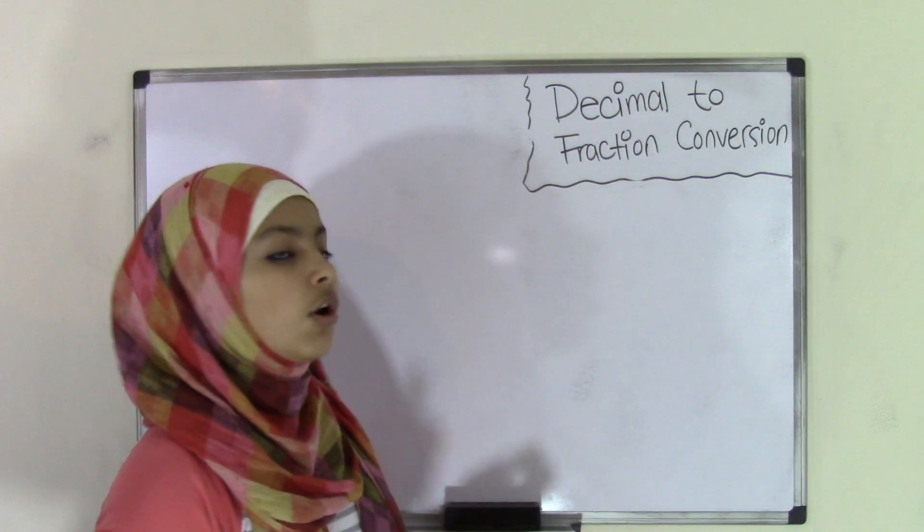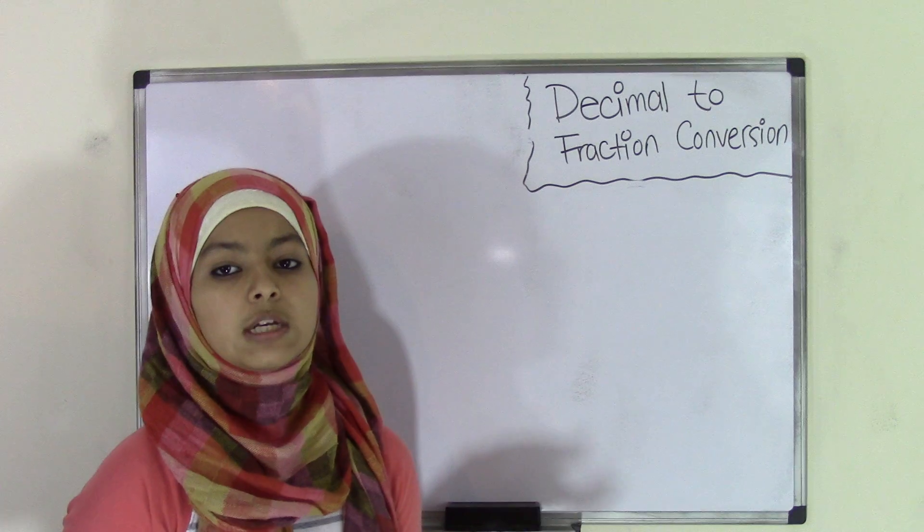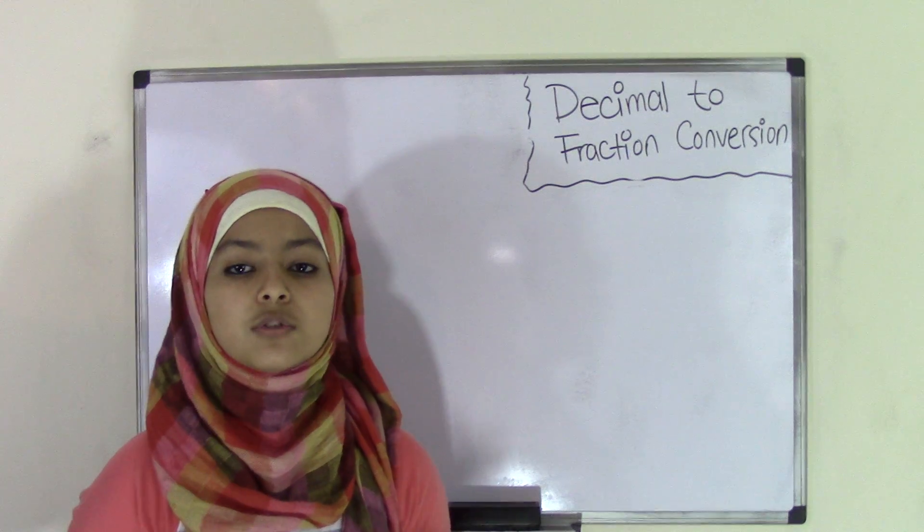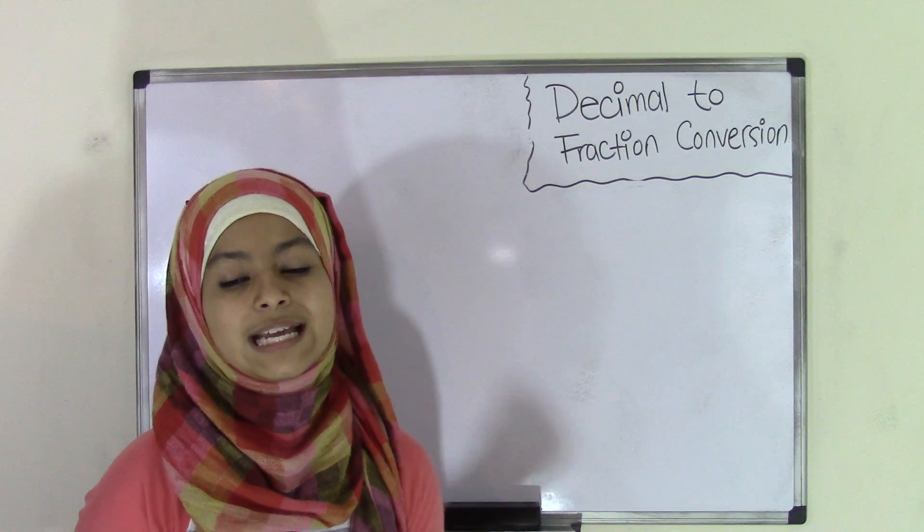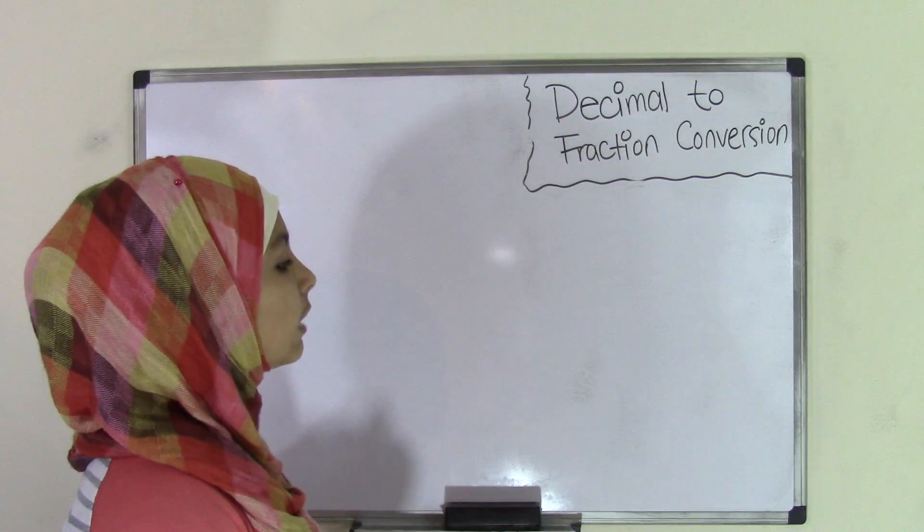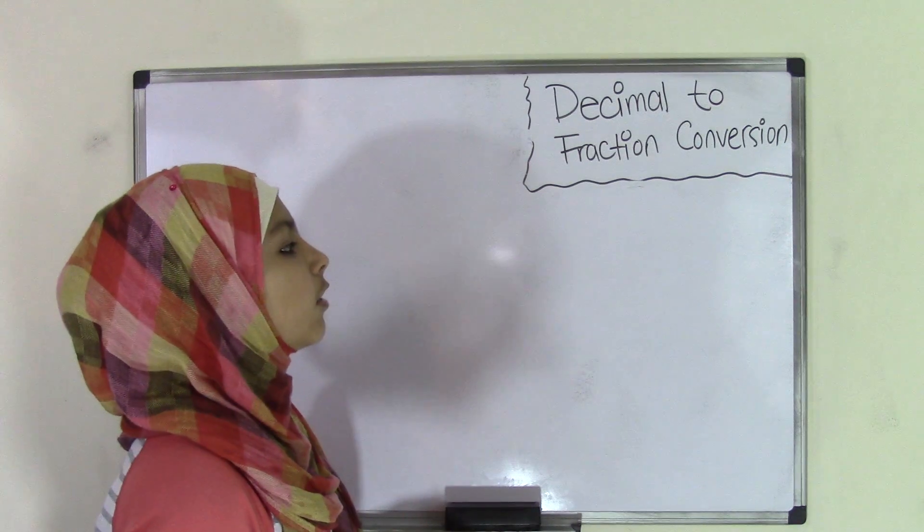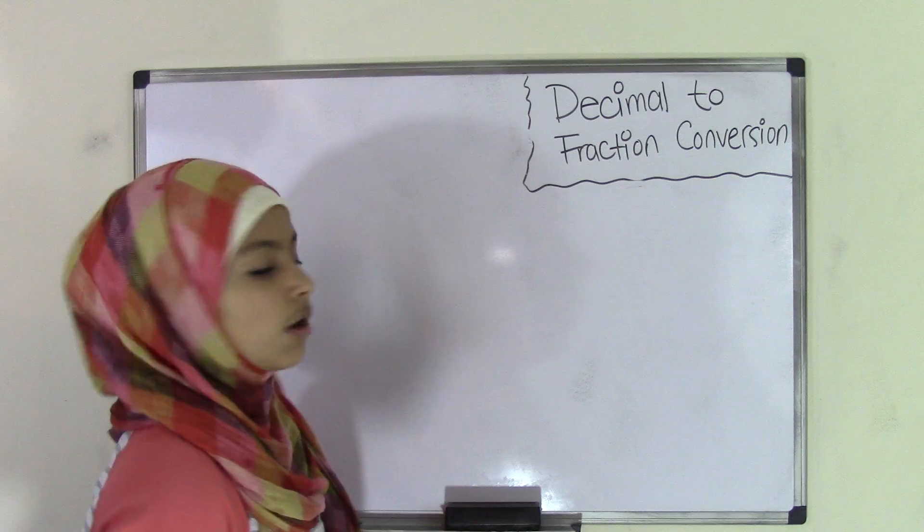Now, the main thing that you need to know in order to convert a decimal into a fraction is your decimal place values. Now, what are decimal place values? Those are just the place values that the numbers hold in decimals. So I'm just going to list an example of a decimal number and I'm going to label that with its place value so that you have a good idea of what decimal place values are.